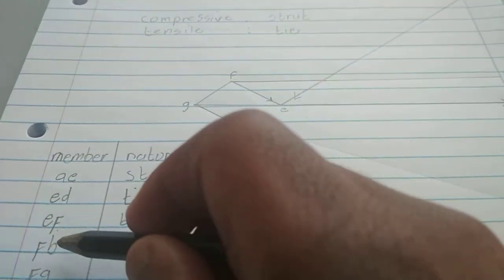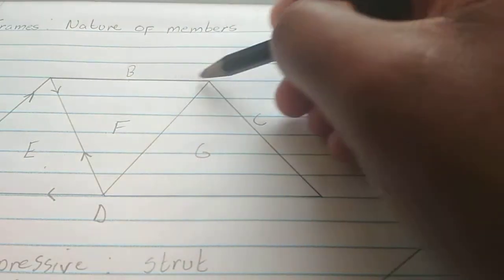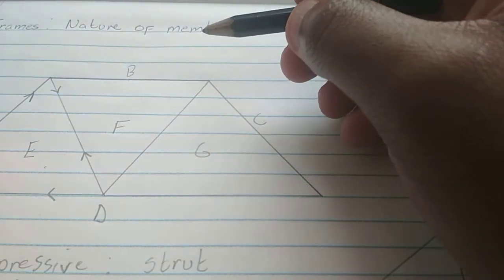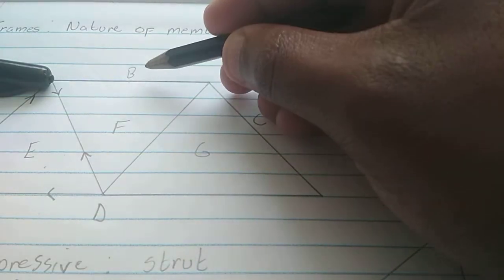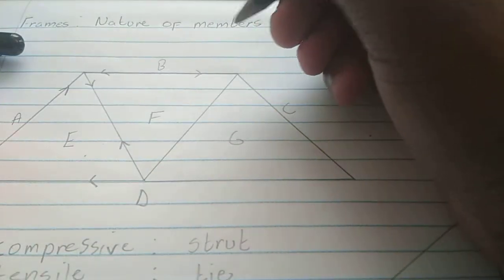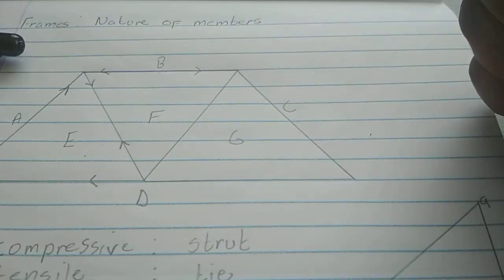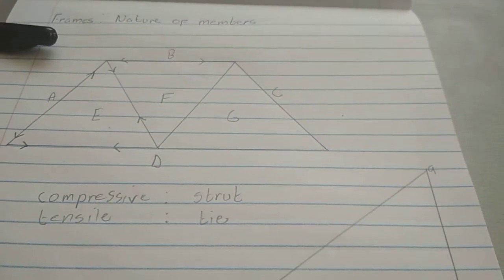The next one is FB. We go to the far left of member FB and move clockwise — we're moving from B to F. We go to our force diagram; there's B and there's F. From B to F, we're going that way. We take that direction, put it right there, and balance it. It's trying to pull itself apart, which means it's experiencing compressive forces, thus making it a strut.